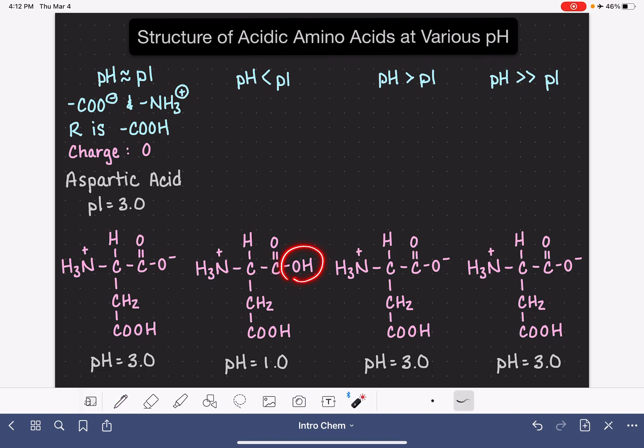We're going to put that hydrogen back on that particular oxygen. At this type of pH our acid group will be COOH, our amino group is still going to be NH3 plus, the R group is still going to be in the COOH form. The charge on this particular version of this amino acid is going to be a plus one because all we have is the positive charge on the nitrogen and no charges anywhere else.